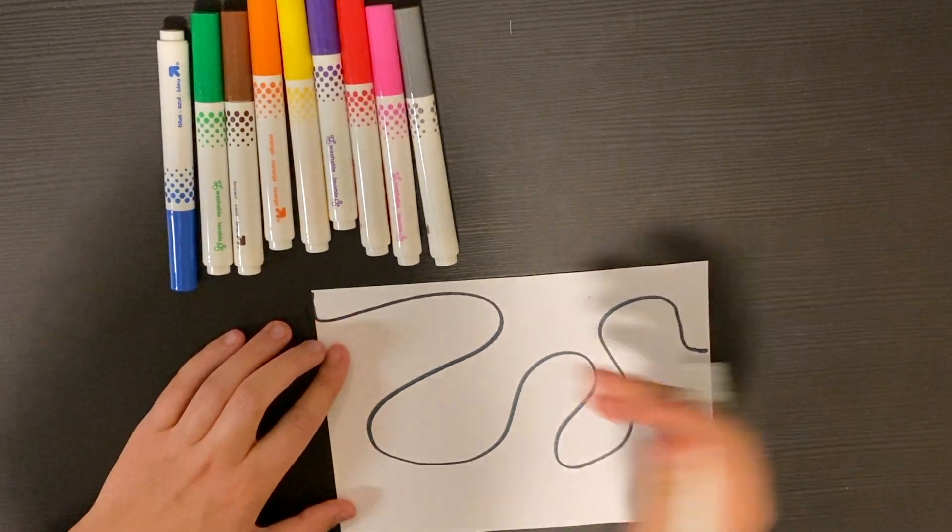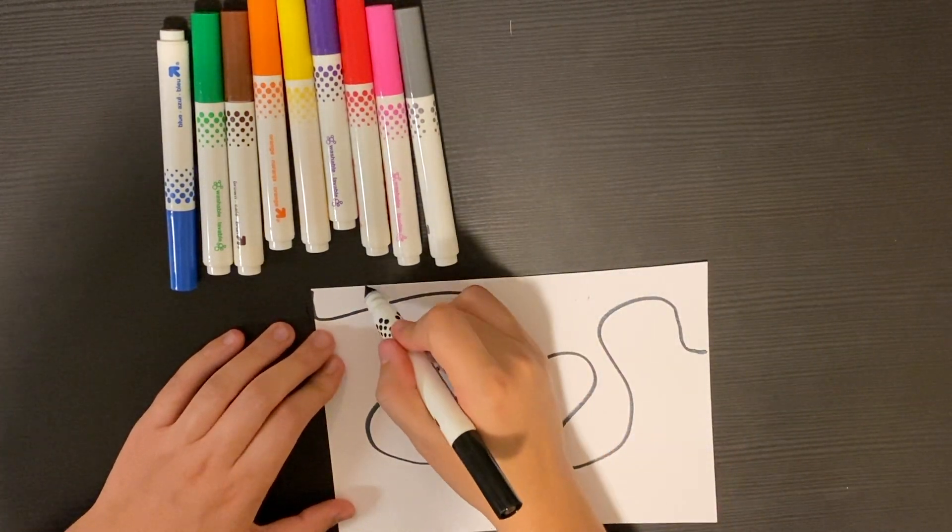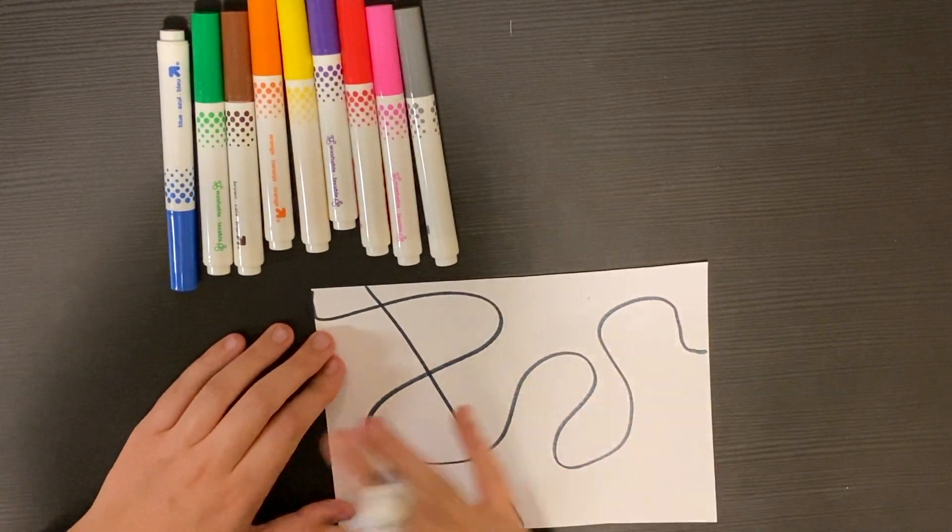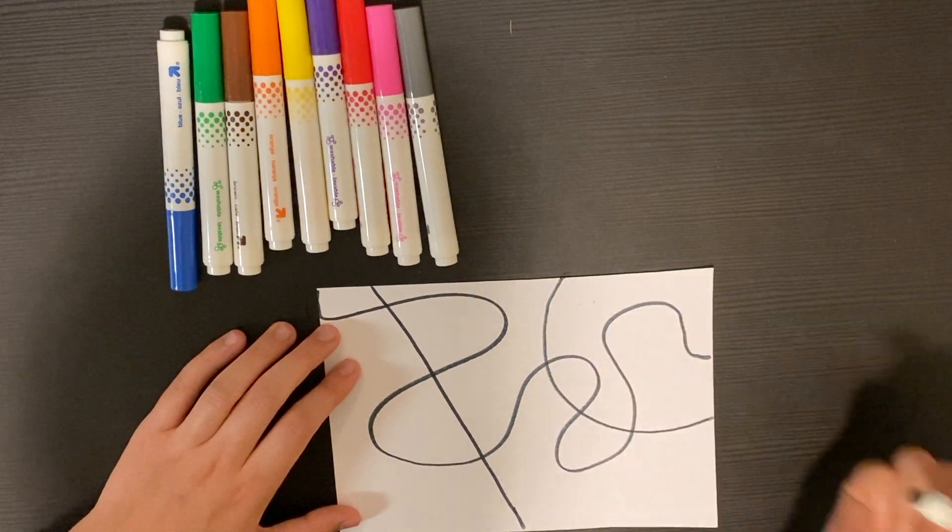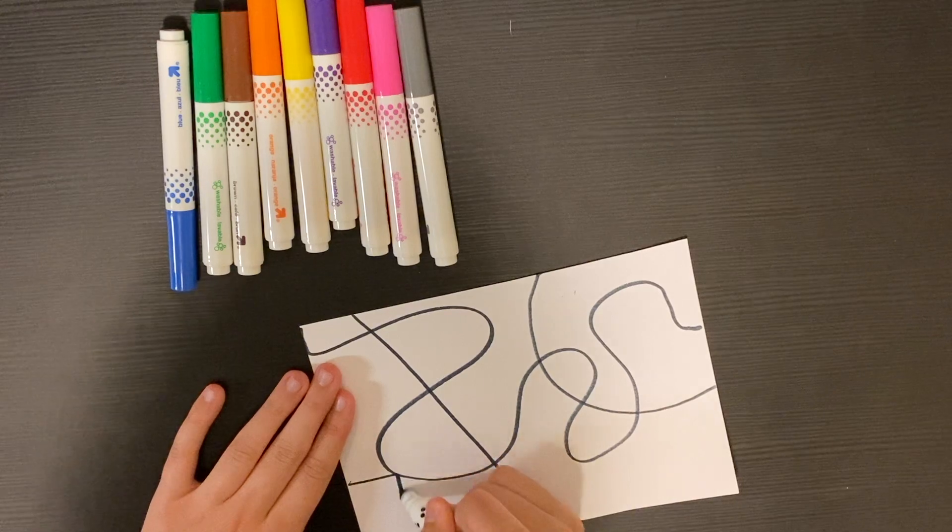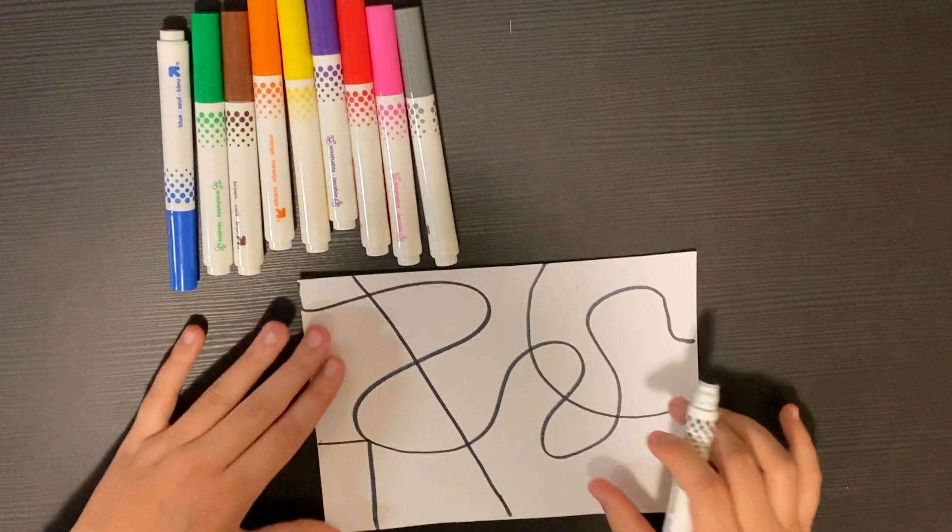Now we're going to start from one edge of our paper and continue a line going to the other edge. And then we're just going to keep adding lines until we are happy with it. You can do straight lines, curvy lines, you can do shapes on your paper. It's all entirely up to you.